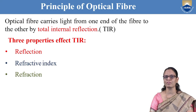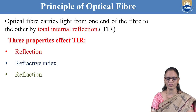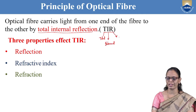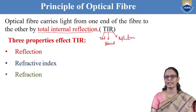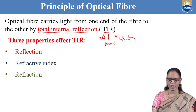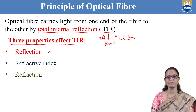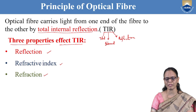The principle on which optical fiber works is total internal reflection, abbreviated TIR. Three properties of light affect this phenomenon: reflection, refractive index, and refraction. We need to understand these phenomena in order to understand total internal reflection.